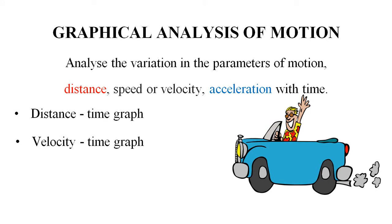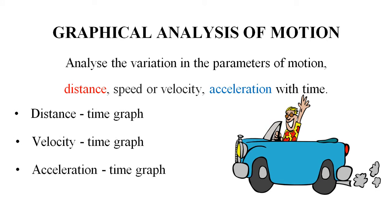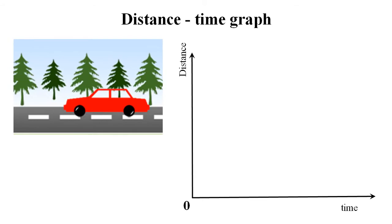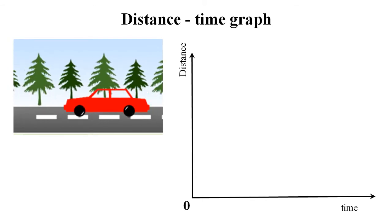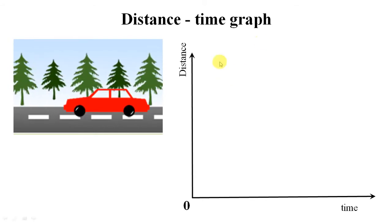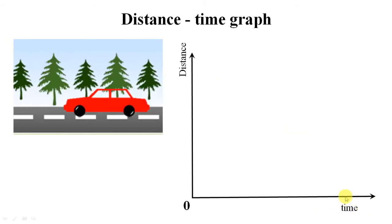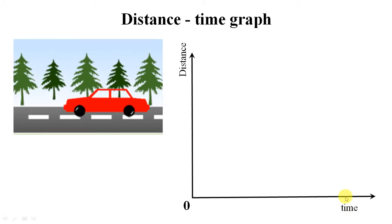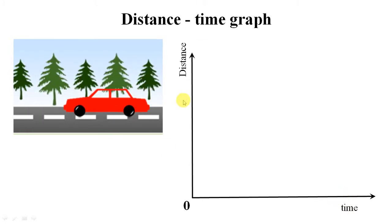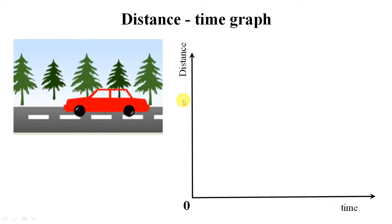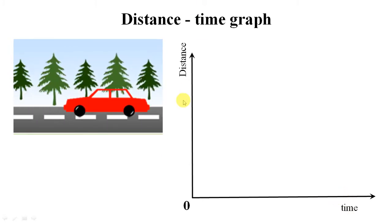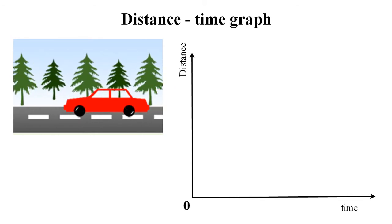Starting with the distance-time graph: in a Cartesian plane, time is taken on the x-axis, that is the horizontal axis, and distance is taken on the y-axis, that is the vertical axis. Let's start analyzing the first case of the distance-time graph.